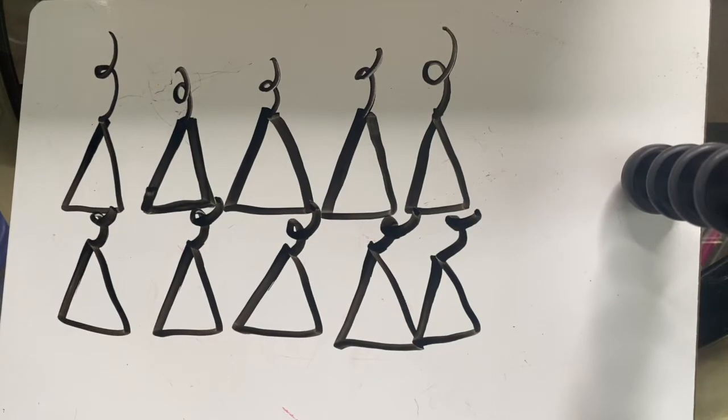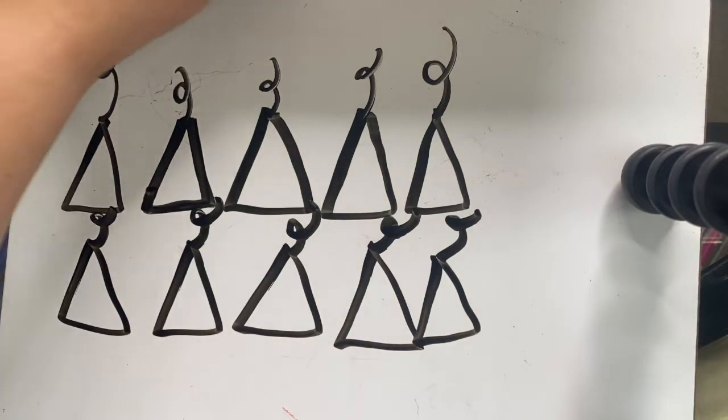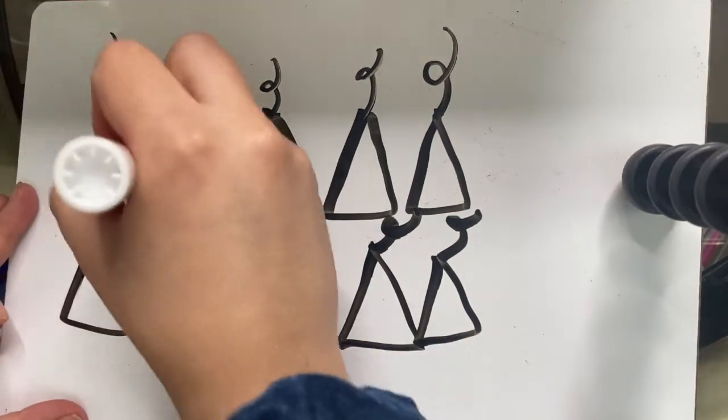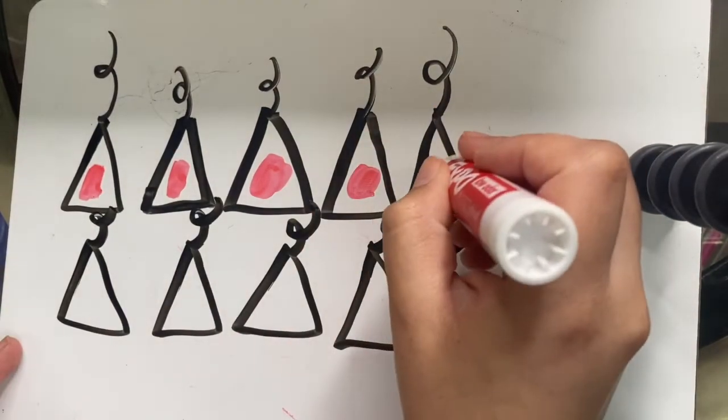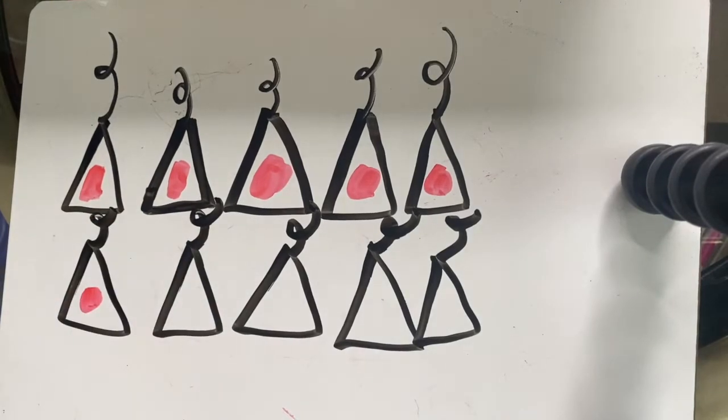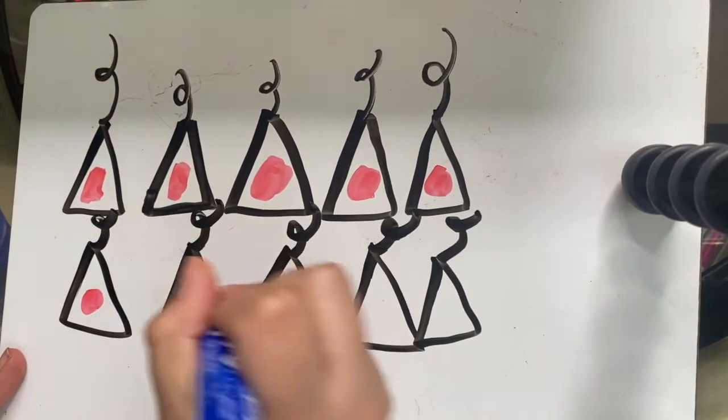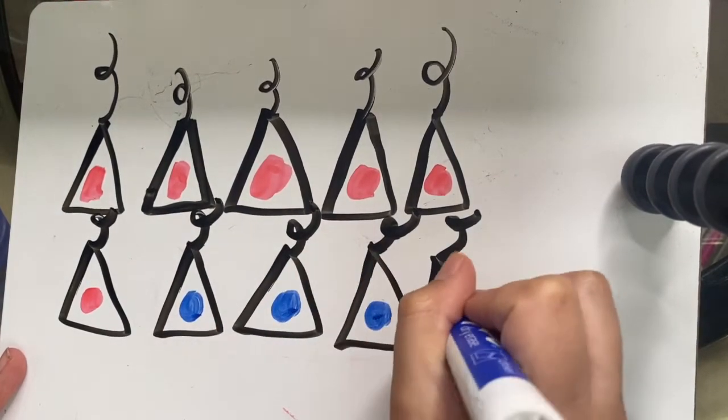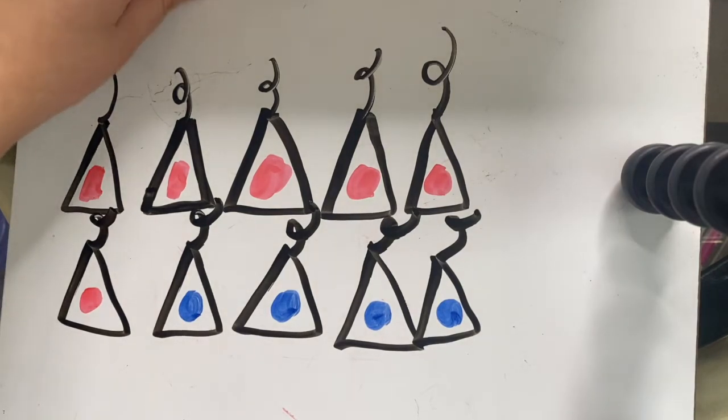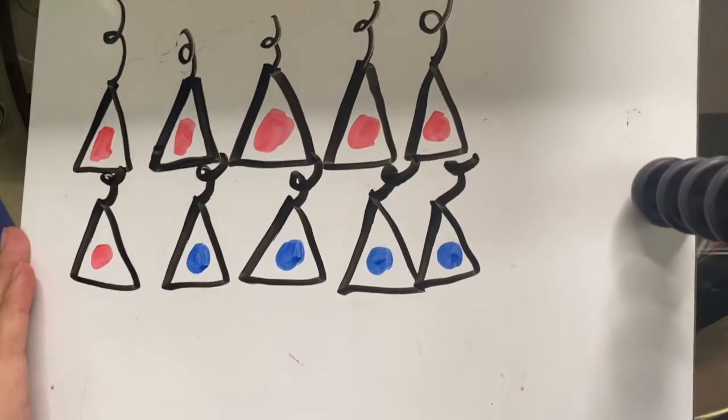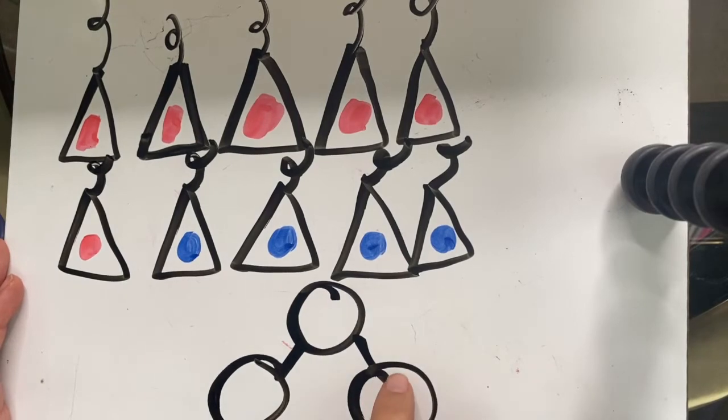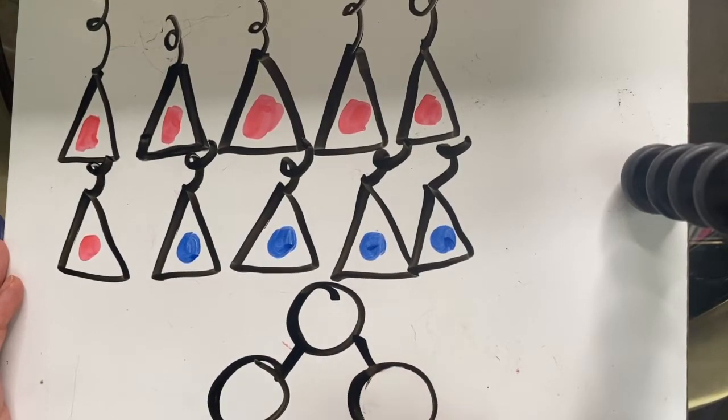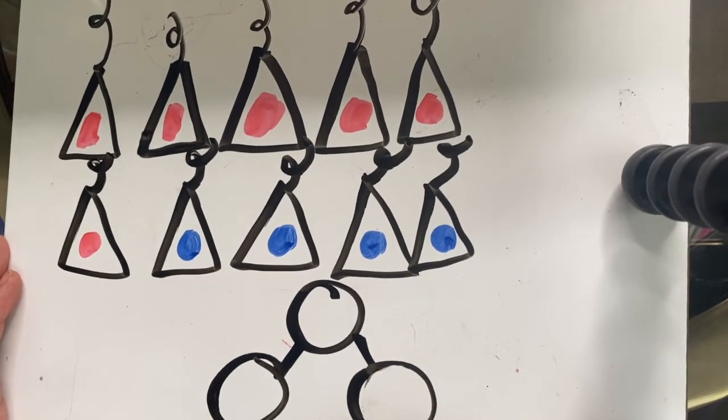So we have 10 party hats. Some are red, and some are blue. Make a number bond about your picture. So I'm going to color in six of mine red, and the rest blue. How many are blue? Four. And how many are red? Six. And how many party hats all together? 10.